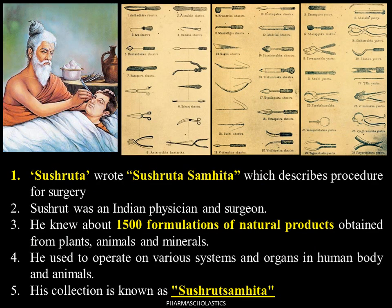Indian history of medicinal plants is dated back to 3500 BC. The curative properties of plants have been mentioned in the suktas of the Rigveda and Atharvaveda. Ayurveda has also described a good number of plants with their therapeutic properties. The ancient well-known treatise in Ayurveda is the Sushruta Samhita, written by Sushruta, an Indian physician and surgeon who knew about 1500 formulations of natural products obtained from plants, animals, and minerals. He operated on various systems and organs in the human body and animals.